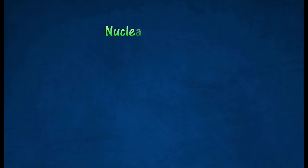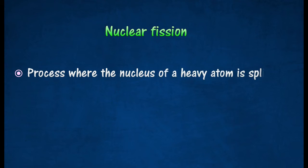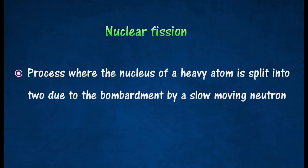Nuclear fission is a process in which a heavy nucleus splits into two or more lighter nuclei of roughly equal mass, with the release of three neutrons and a huge amount of heat energy.